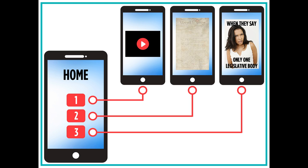When users log onto the app, they will see three buttons. First, they will have a video on the purpose of the Articles of Confederation. Second, they will have examples of some of the articles that users can read through. And third, there will be memes about the consequences of the Articles of Confederation.